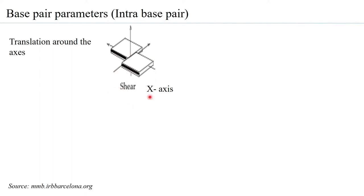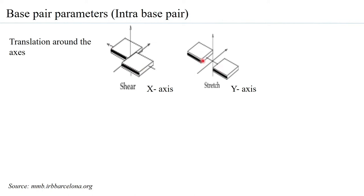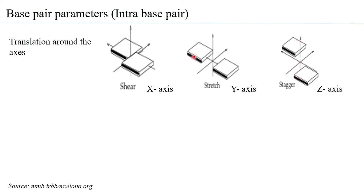Suppose the translation is along the y-axis: one base moves as a single body in one direction and the other base moves in the other direction, so the distance between the two bases in the base pair increases — that leads to what is called a stretch. Similarly, when you have translation around the z-axis, one base moves one way and the other moves the other way; with respect to each other they are essentially rising, leading to what is called a stagger conformation.